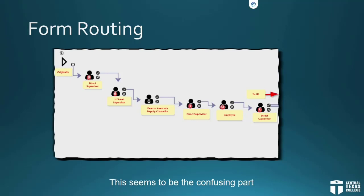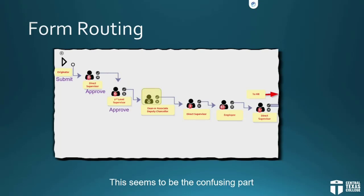Here's the workflow — this causes a lot of confusion, mainly because the direct supervisor gets this form so many times. The originator fills in the basics of the form and then clicks Submit. If the direct supervisor is not the originator, the form flows to the direct supervisor. If the direct supervisor is the originator, they essentially send the form to themselves, go to their inbox, and open the form to act on it. Once the direct supervisor completes everything they need to do, they click Approve and the form moves on to the second-level supervisor. Once the second-level supervisor is done, they click Approve and the form moves on to the dean or associate deputy chancellor, who then also clicks Approve.